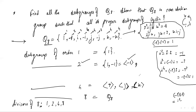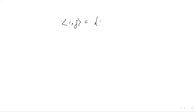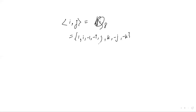The order 4 subgroups are generated by i, j, and k. If we take any two elements together, their generated subgroup contains 1, i, i² = -1, i³ = -i, j, ij = k, and so on — so any two elements generate the whole group Q8.